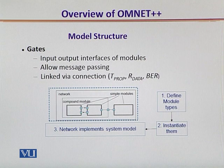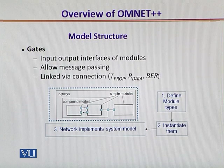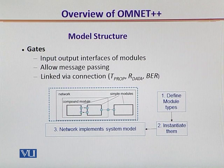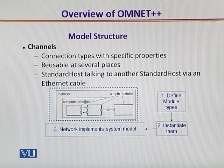The figure summarizes the overall development of the simulation process in three steps. First, we define the module types and instantiate them depending upon the features and properties we want to utilize. Finally, the network — which embodies simple and compound modules — starts to function as a simulation. A concept closely related to gates is the channel: when we define specific properties of a connection, that becomes a channel.